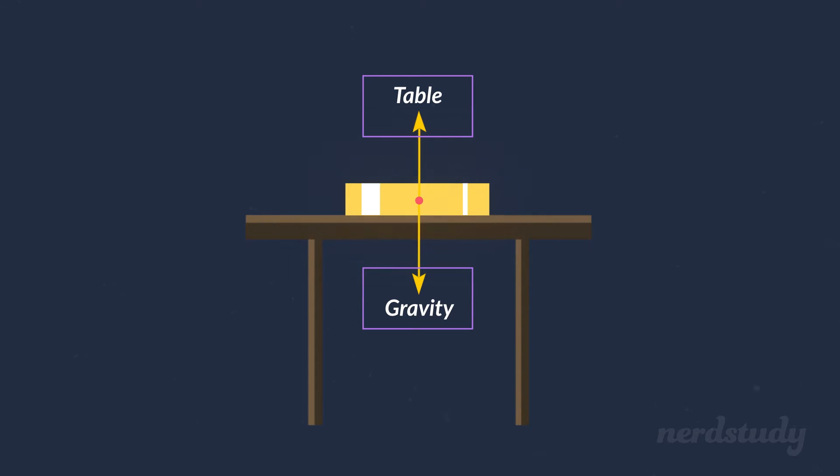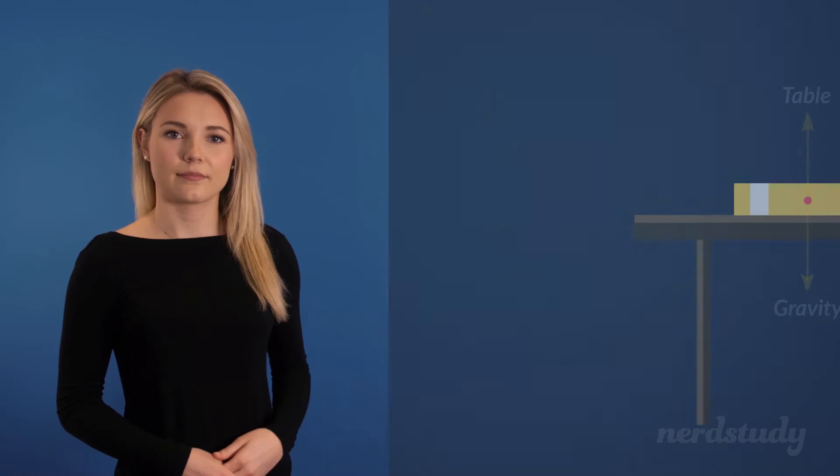But the pair of forces in Newton's Third Law act on two different objects. Therefore, Newton's Third Law is not a good explanation for why the book doesn't fall downward through the table. Okay then, what is the explanation?